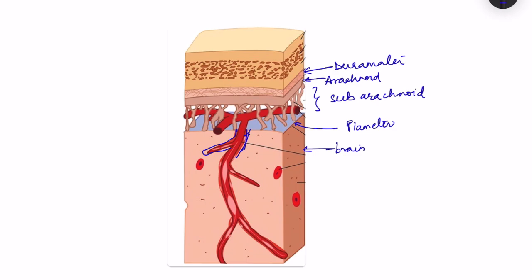The blood vessels dip into the substance of the brain. In the perivascular space — the space around the blood vessels — some amount of CSF is also present. This is very important because if there is any leakage of proteins, it is via this space that they return back into the CSF.